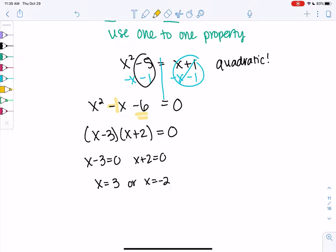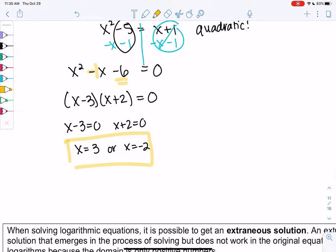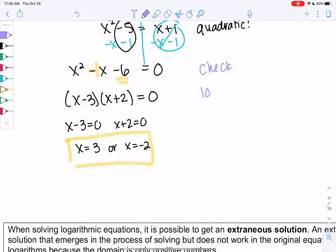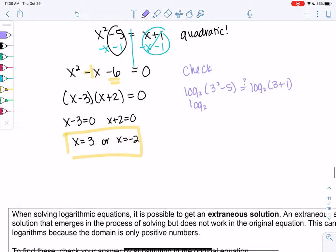So we have two solutions. There's a minor issue here and let's see what happens. Let's check our work. I'm going to plug into the original equation. Log base 2 of 3 squared minus 5. Does it equal log base 2 of 3 plus 1? We get log base 2 of 9 minus 5 or 4. And then we get log base 2 of 4. So yeah, looks good. Both sides are the same.